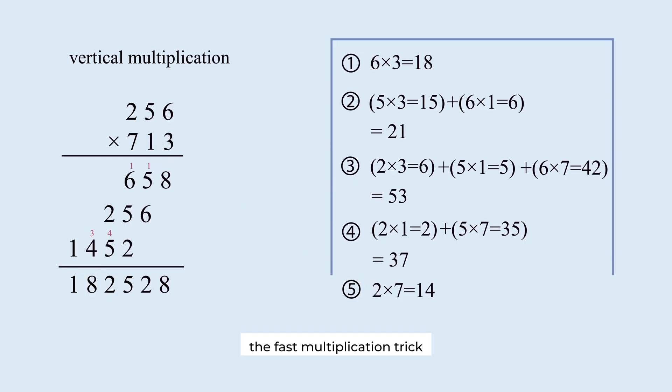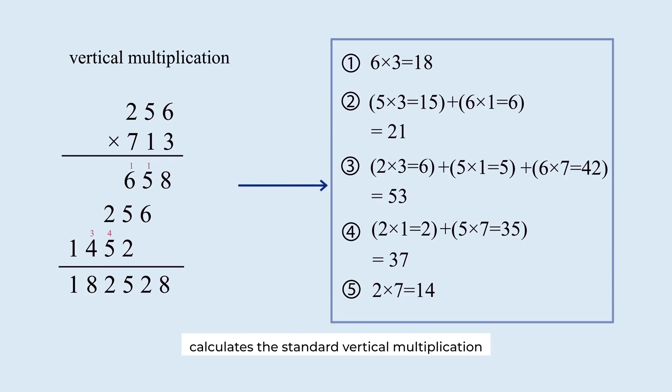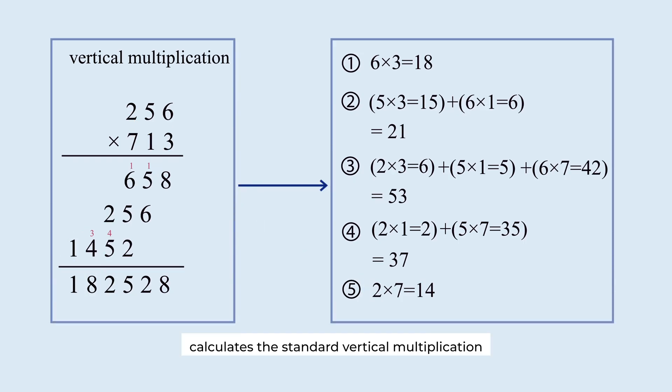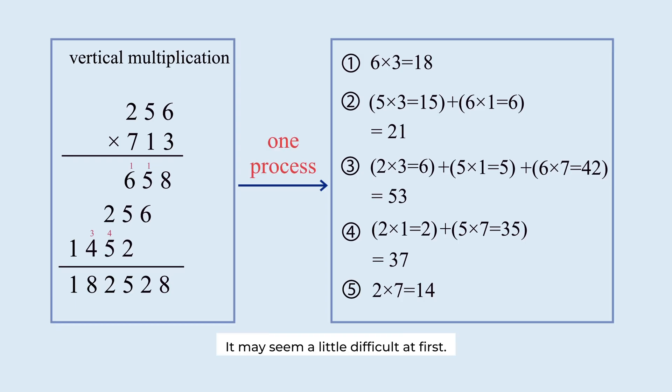The fast multiplication trick calculates the standard vertical multiplication in a single process. It may seem a little difficult at first, but once you get used to it, it becomes faster.